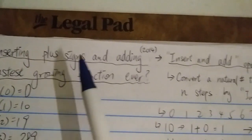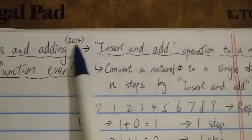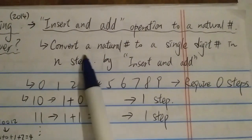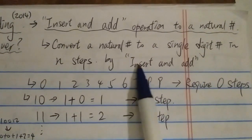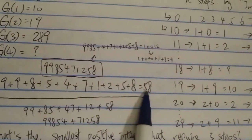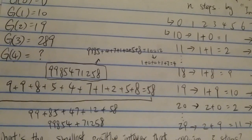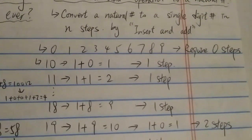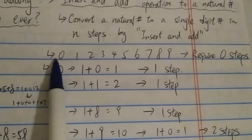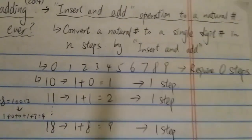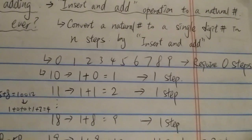So what is the inserting plus signs and adding? It's basically a pretty recent paper from Ron Graham and two other collaborators. This is about trying to convert a natural number to a single digit number in any number of steps by using the insert and add operation. So what is the insert and add operation? Pretty straightforward — you're just adding plus signs between the digits. For any number from 0 to 9, here we're only using positive integers or natural numbers, so 0 to 9 requires 0 steps to become a single digit number, obviously, because it's already a single digit number.